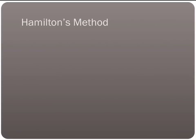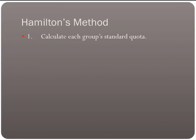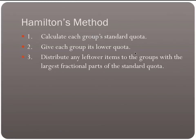First, Hamilton's method — this is like, actually, Alexander Hamilton. His method: first, calculate each group's standard quota. Then give each group its lower quota, meaning round the standard quota down. Then distribute any leftover items to the groups with the largest fractional parts of the standard quota.